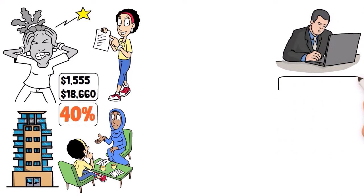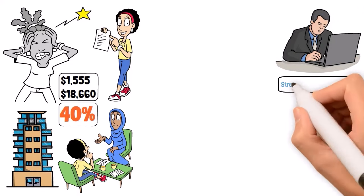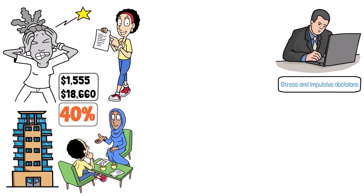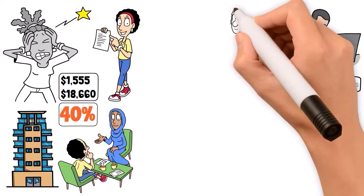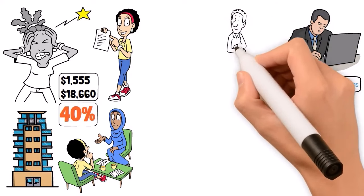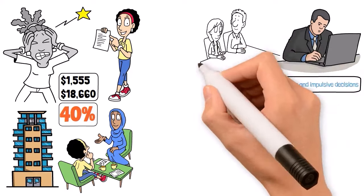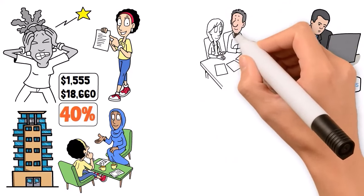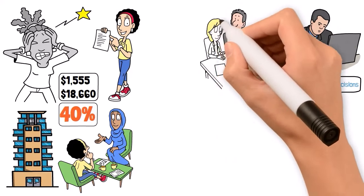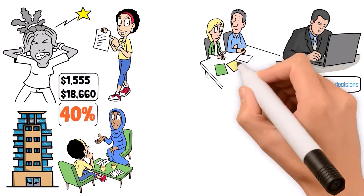Constantly monitoring your retirement accounts can lead to stress and impulsive decisions. Remember, retirement investing is a marathon, not a sprint. The market will have ups and downs, but it's the long-term trends that matter. Checking once a quarter or even once a year can keep you informed without the emotional rollercoaster.